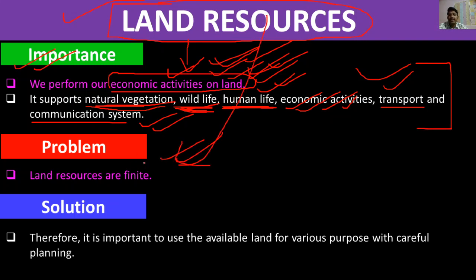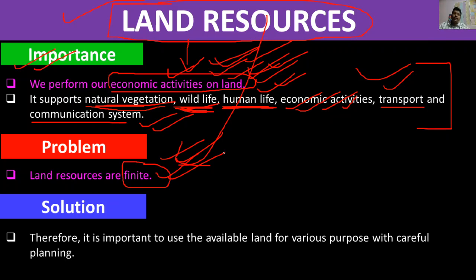Problem yeh hai ki land resource bhi finite hai — jitna land available hai utna hi hai. Aisa nahi hai ki usko rubber ki tarah kheench denge toh bada jayega. Land finite hai. Pure world mein jitna land available hai utna hi available hai, woh kam zaroor ho raha hai.